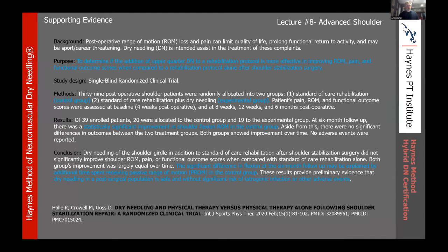A little bit of supporting evidence — a study by Halley. Their purpose was to determine if the addition of upper quarter dry needling to a rehab protocol is more efficient and more effective in improving range of motion, pain, and so forth. They showed that the significant difference in flexion at the six-month follow-up may be explained by additional time spent receiving passive range of motion in the control group. Their control group did not receive dry needling, but instead received more range of motion in that same time frame. That kind of skews the study. They didn't show any significant difference, but they had different treatment protocols. What it did do is provide evidence that dry needling in a post-surgical population is safe and without significant risk of iatrogenic infection or other adverse events.